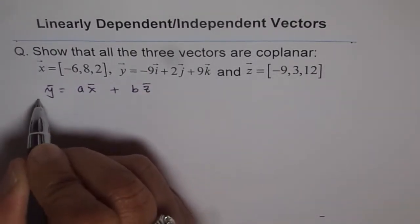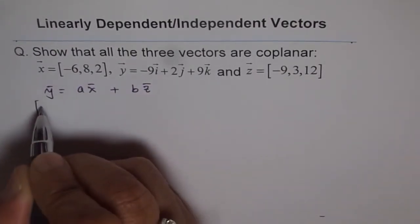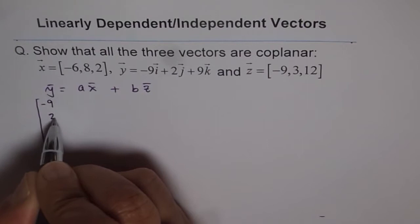So y for us is, so I will use color matrix here, minus 9, 2, and 9.